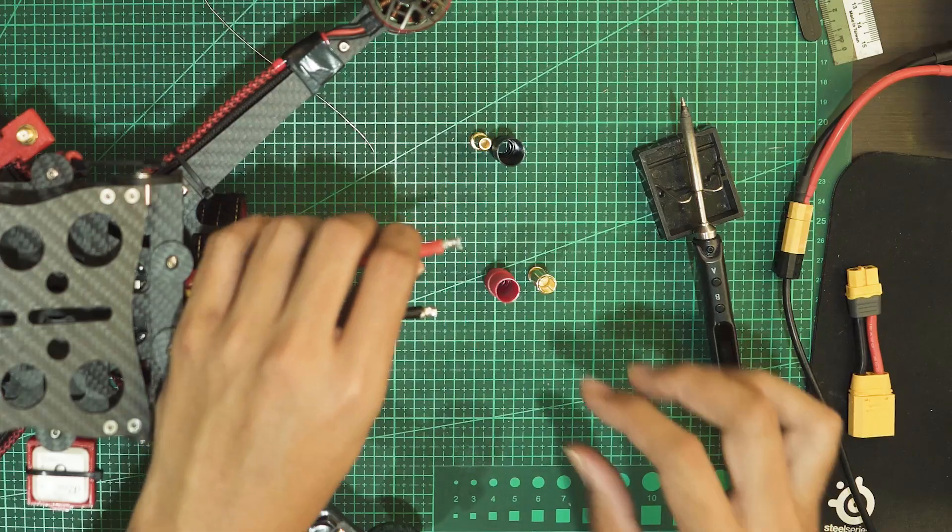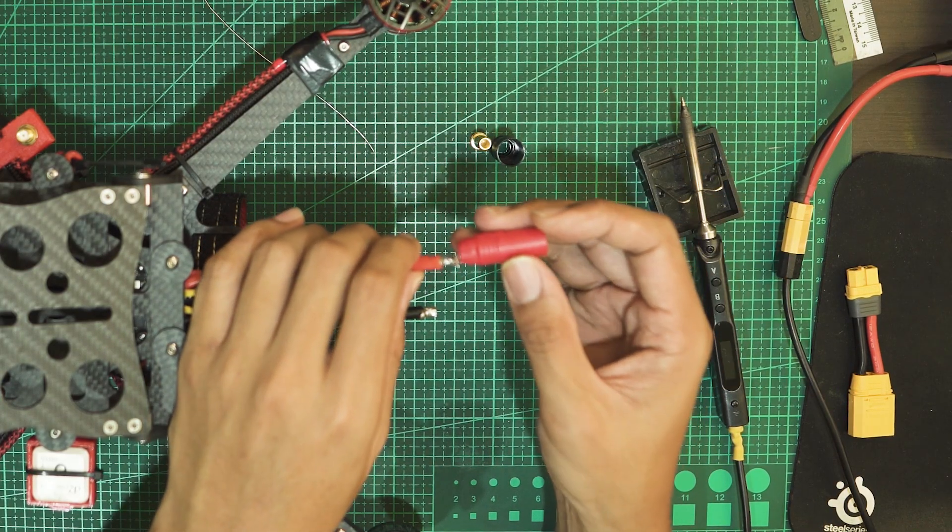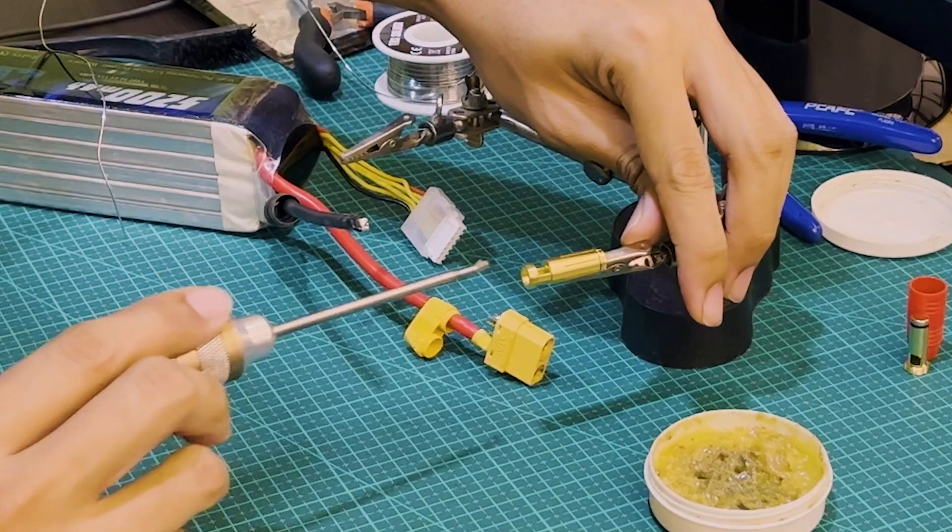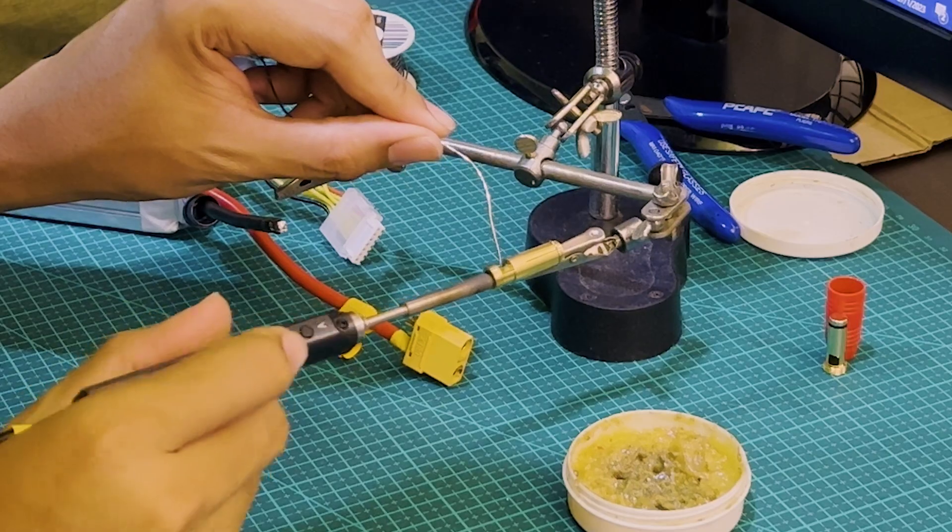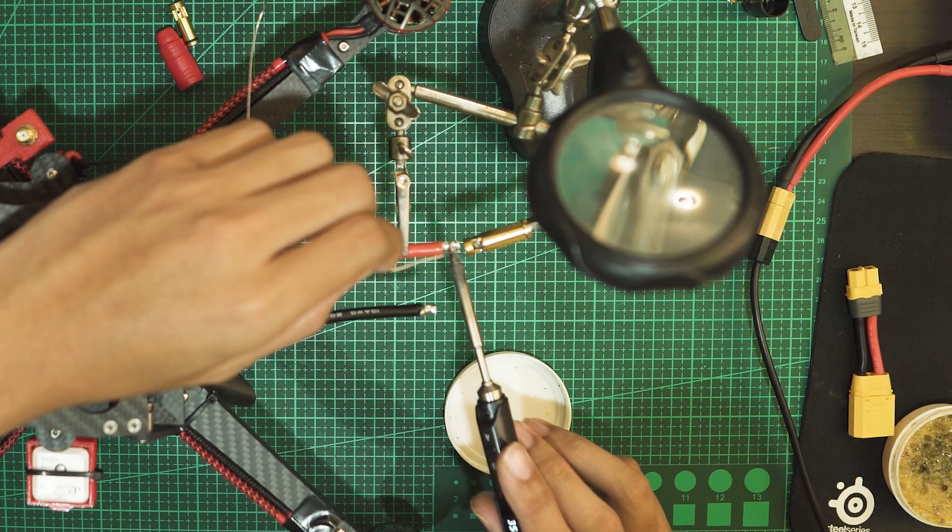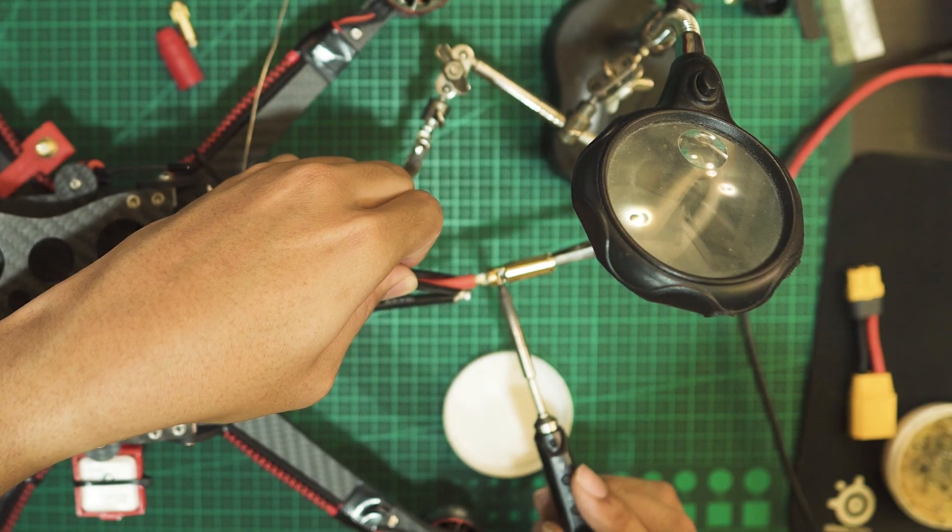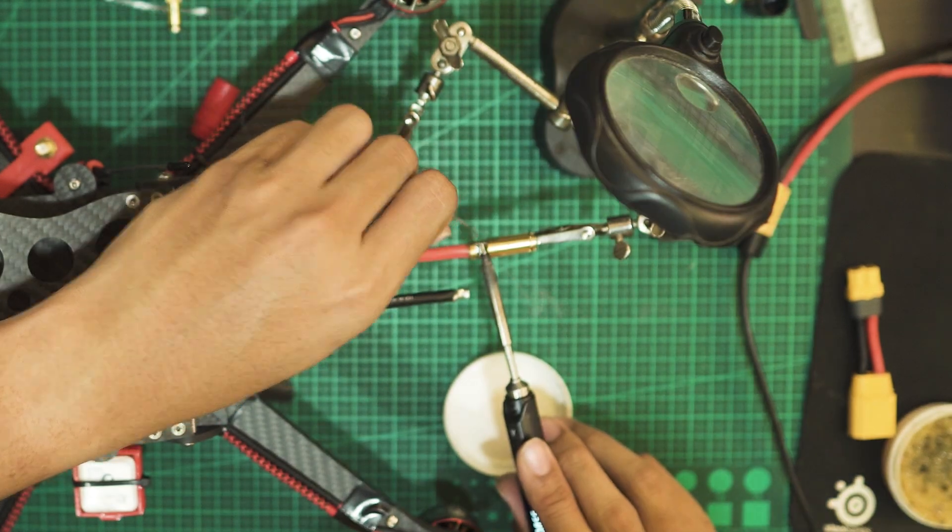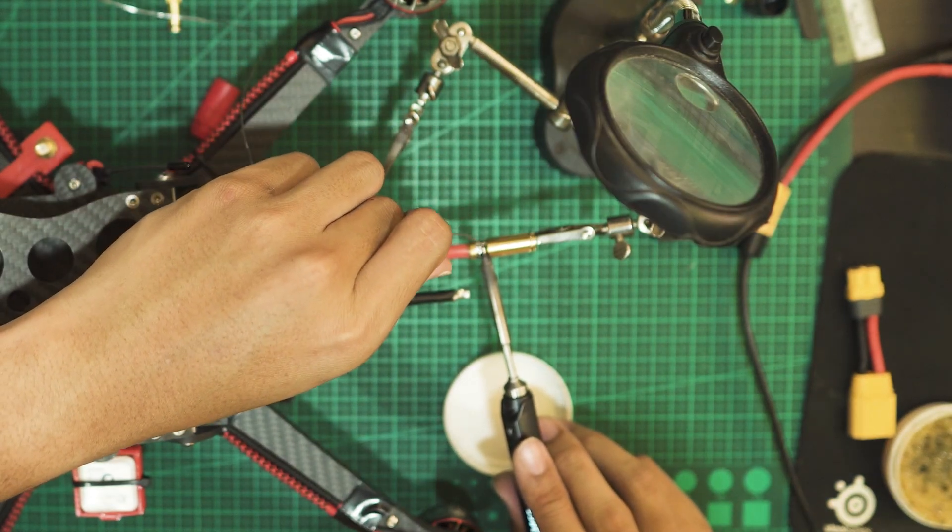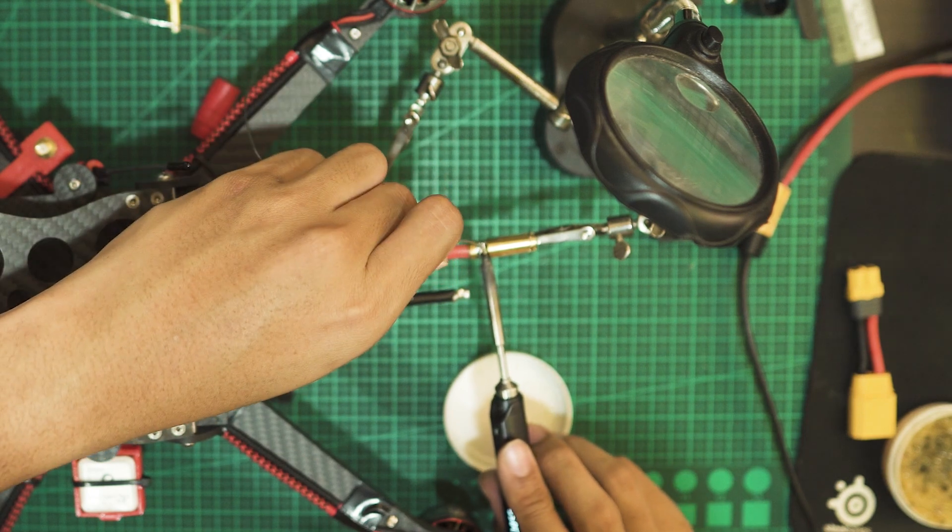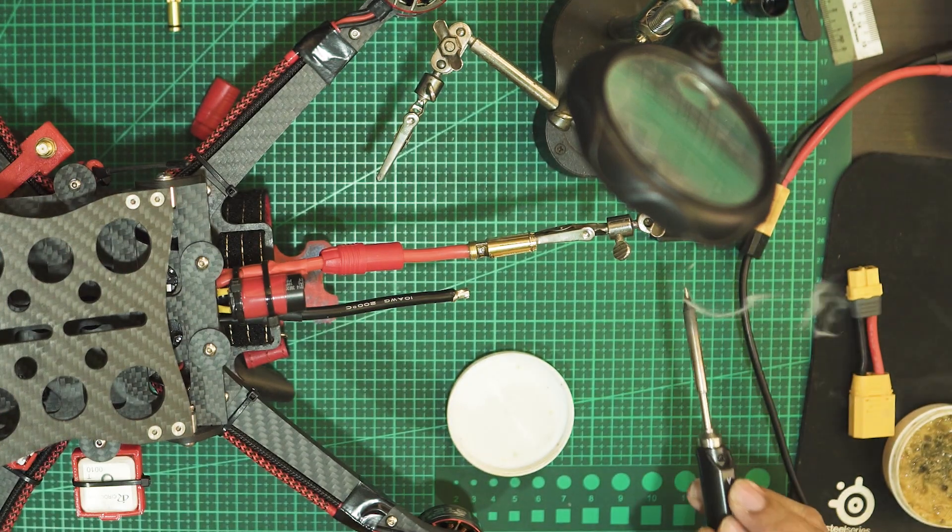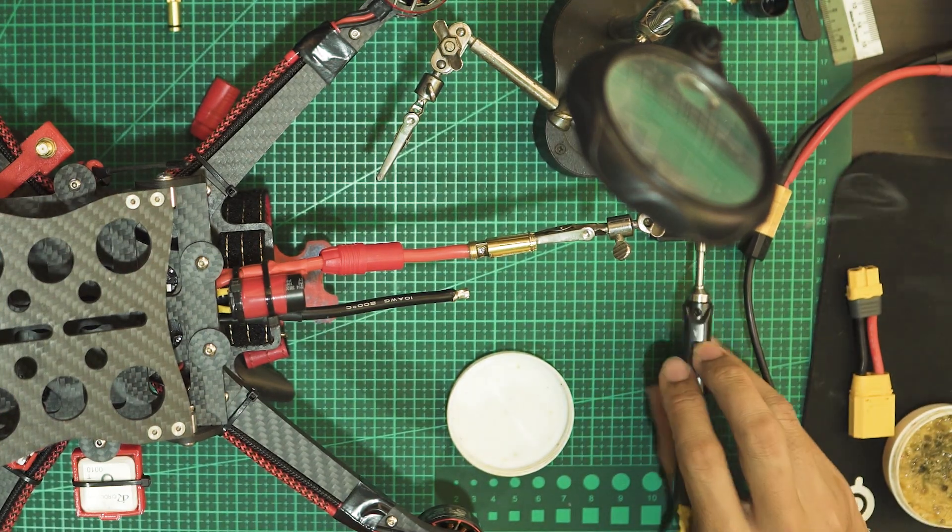So before you go on soldering, just put the plastic casing of the positive lead through the ESC wire. I'll let flux and tin both the bullet connector as well as the ESC wire. Then I'll insert the wire into the bullet connector and I'll be generous and drown it with solder, just to make sure that both my wire as well as the bullet connector has enough solder for them to meet and sit in place securely.